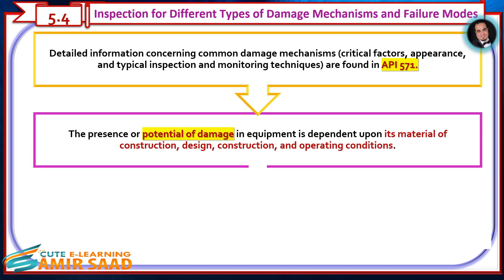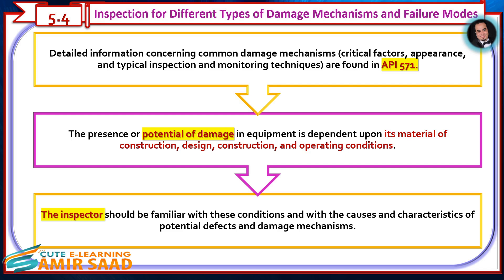The presence or potential of damage in equipment is dependent upon its material of construction, design, construction, and operating conditions. The inspector should be familiar with these conditions, and with the causes and characteristics of potential defects and damage mechanisms.